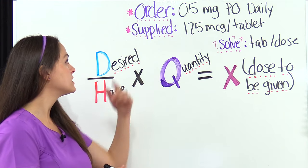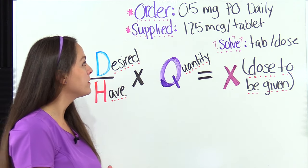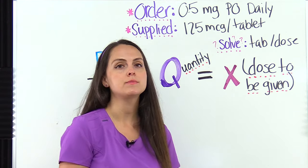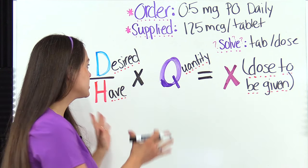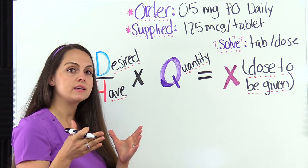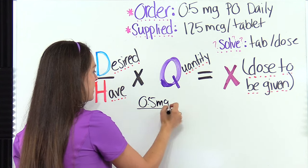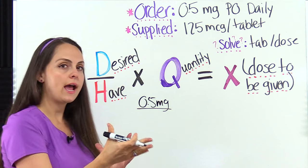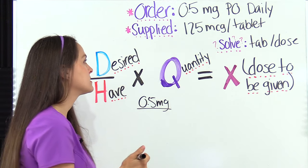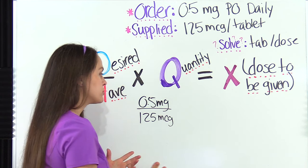This problem says the physician orders 0.5 milligrams by mouth daily and we're supplied with 125 micrograms per tablet. We need to figure out how many tablets per dose. So let's plug our information into the formula. The D part — the desired, what is desired for the patient — is the ordered dose: 0.5 milligrams. The H part is what we have on hand; the medication label tells us there is 125 micrograms in these tablets — that's our strength.